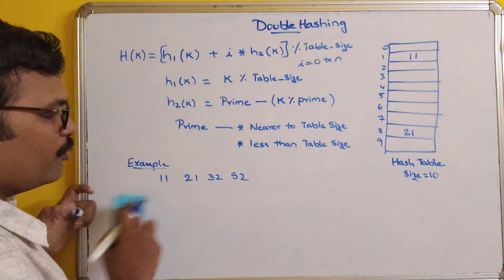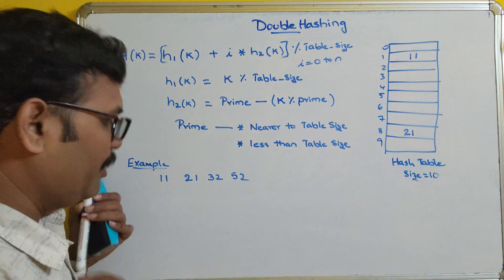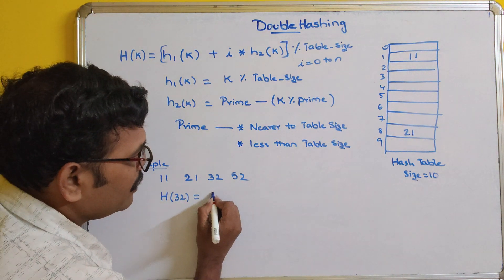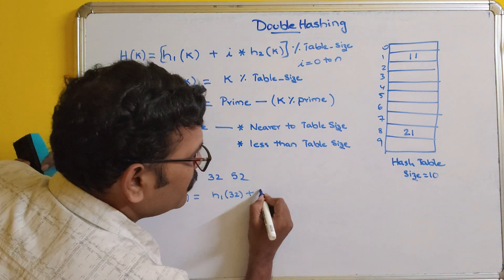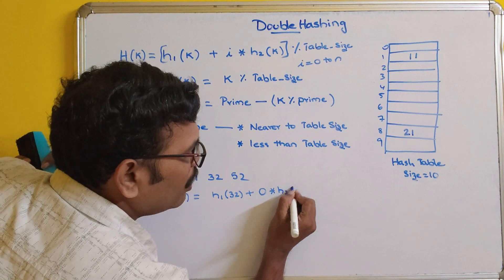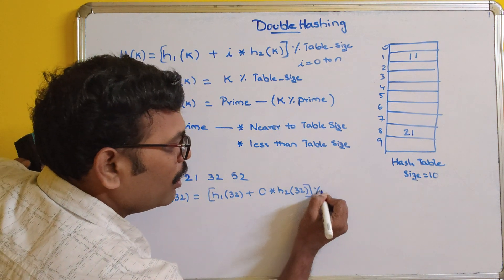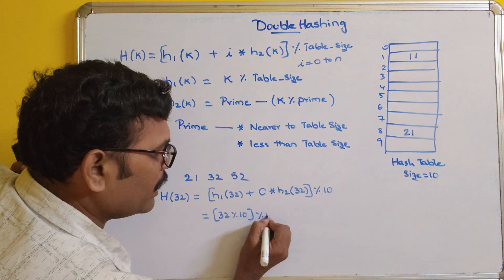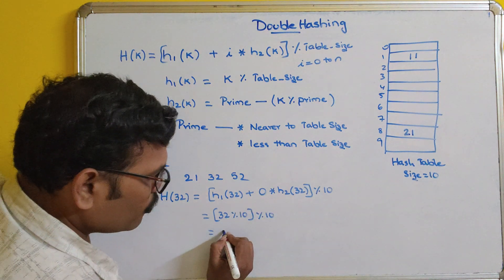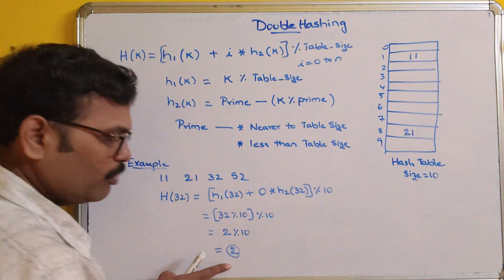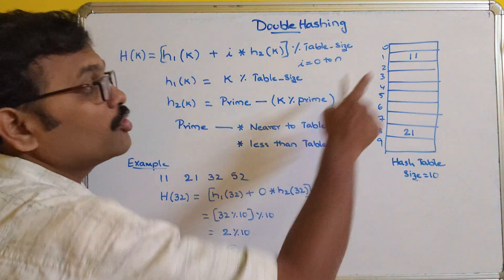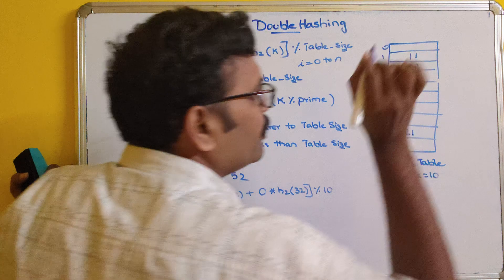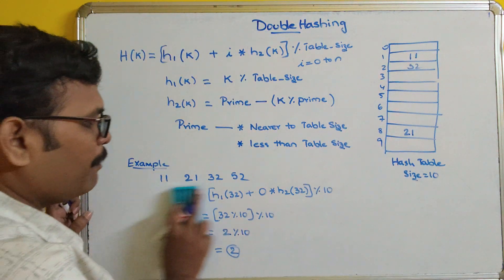Now for element 32: the hash code is (H1(32) + 0 · H2(32)) mod 10 = 32 mod 10 mod 10 = 2 mod 10 = 2. There is no element at index 2, so there is no collision, and we directly store 32 at index 2.